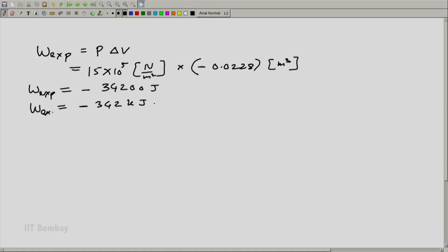So this is the work done on the system, because it has got negative sign. So w expansion is 34.2 kilojoules.